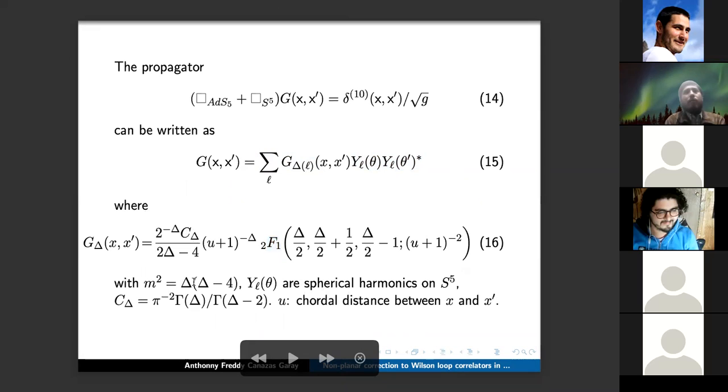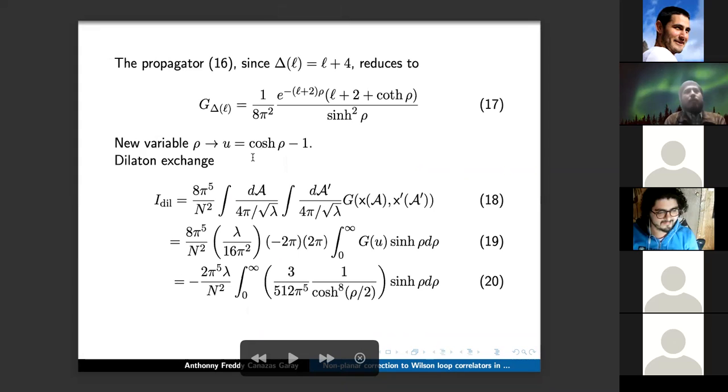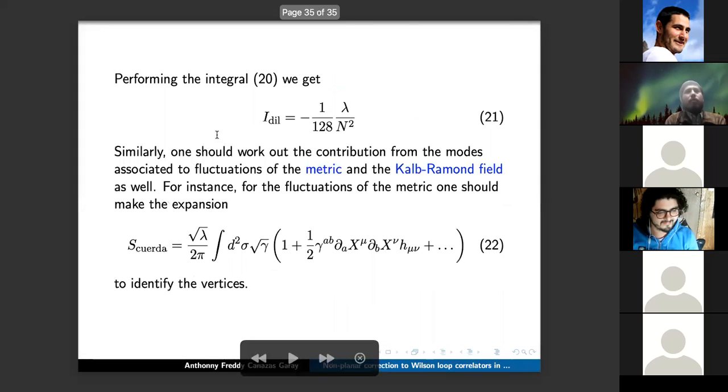Next. This ten-dimensional propagator can be written as a sum over mode propagators times spherical harmonics on S^5. The mode propagators are given in terms of the hypergeometric function, and we are using the chordal distance as the relevant variable. Next. So the mode propagators reduce to that expression. So now we can sum over all the mode propagators, and that's the integral for the dilaton exchange. Next. And that's the dilaton contribution. Similarly, one should work out the contribution from the modes associated to fluctuations of the metric and the Ramond-Ramond field. For instance, for the fluctuations of the metric, one should make the expansion in the Nambu-Goto action to identify the vertices properly.